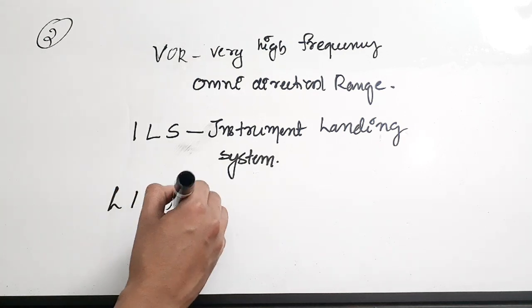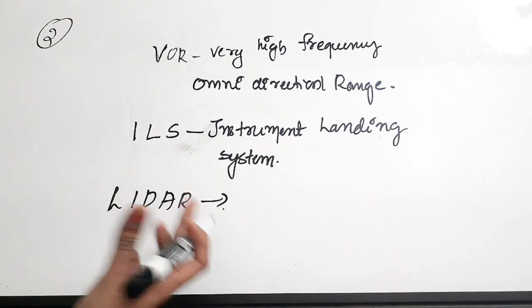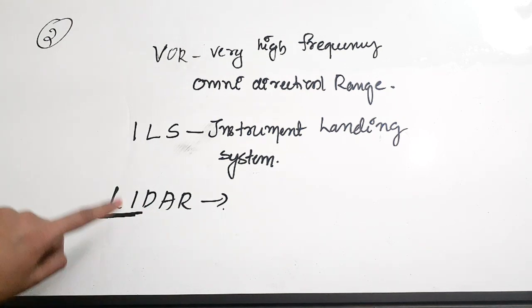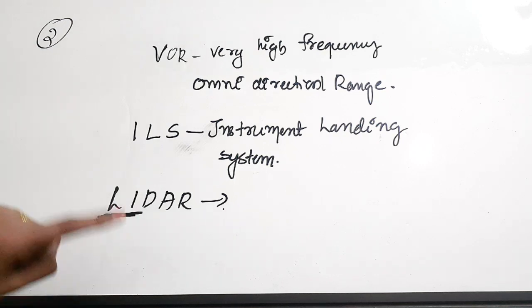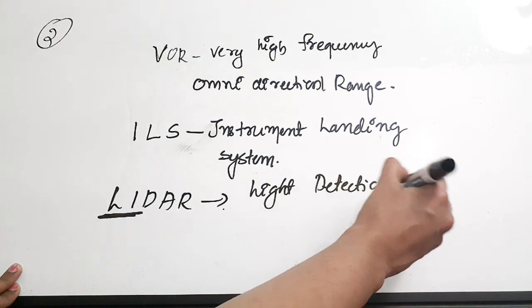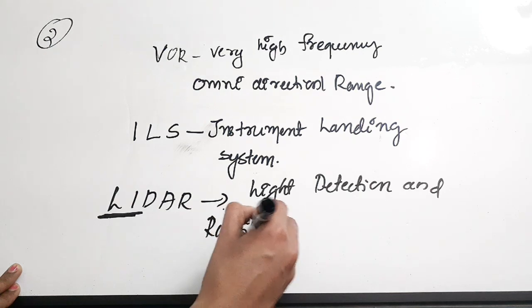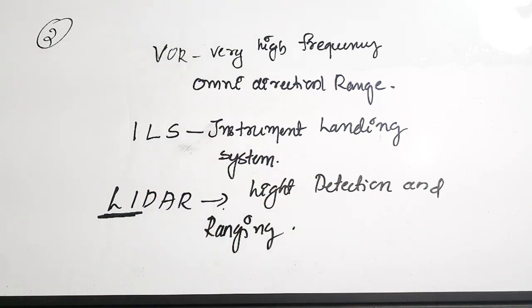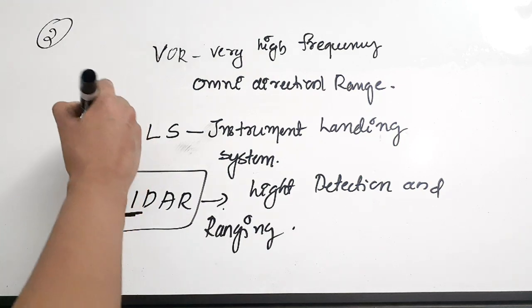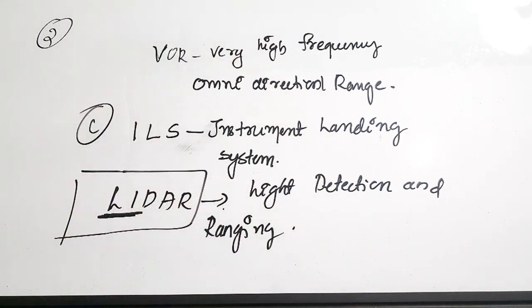LIDAR's name is very similar to radar. LIDAR stands for Light Detection and Ranging. For radar we send radio waves; for LIDAR we send light waves. VHF is simply Very High Frequency, a frequency range. So clearly LIDAR has a working principle similar to radar. The correct answer is option C: LIDAR.